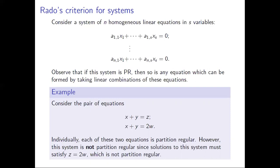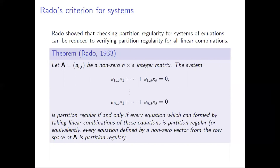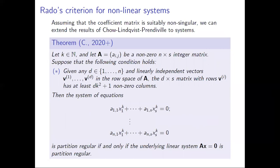Suppose we have a system of equations and we know that every linear combination is partition regular. Does that mean the system is partition regular? Rado showed that the answer is yes. So given a system of linear homogeneous equations, the system is partition regular if and only if each linear combination gives a partition regular equation. Equivalently, if you take any vector in the row space of the coefficient matrix A and look at the corresponding equation, that must be partition regular.